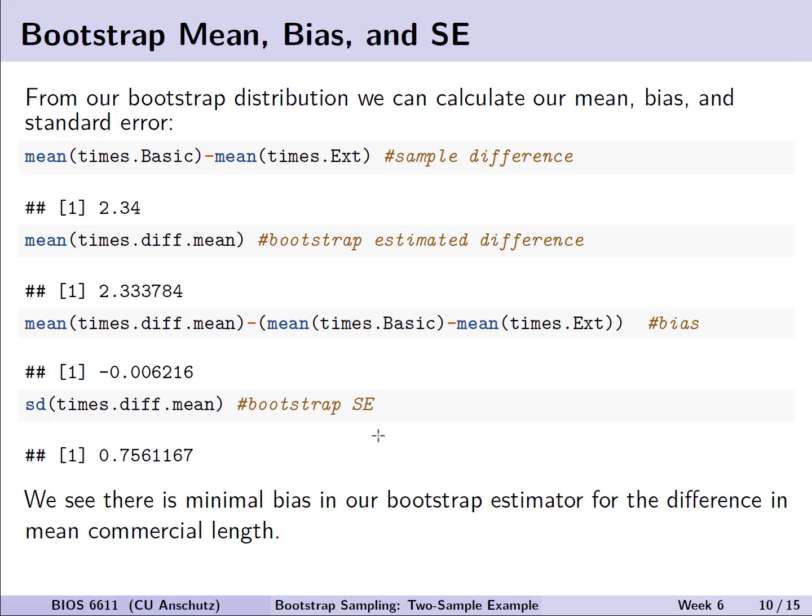From our bootstrap distribution, we can also calculate the mean, the bias, and the standard error. For example, we do see that, on average, there are longer durations for commercials in basic versus extended cable.